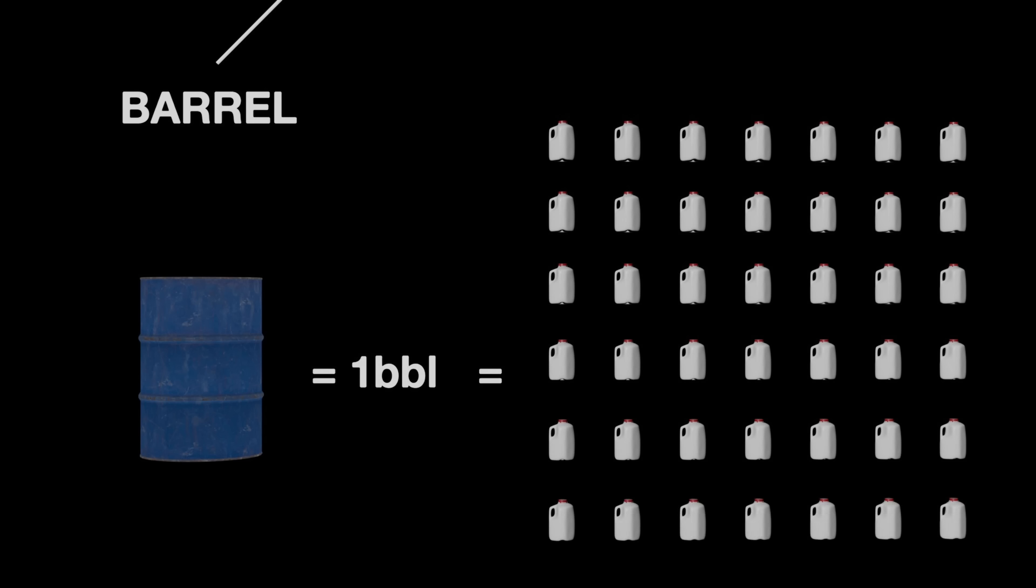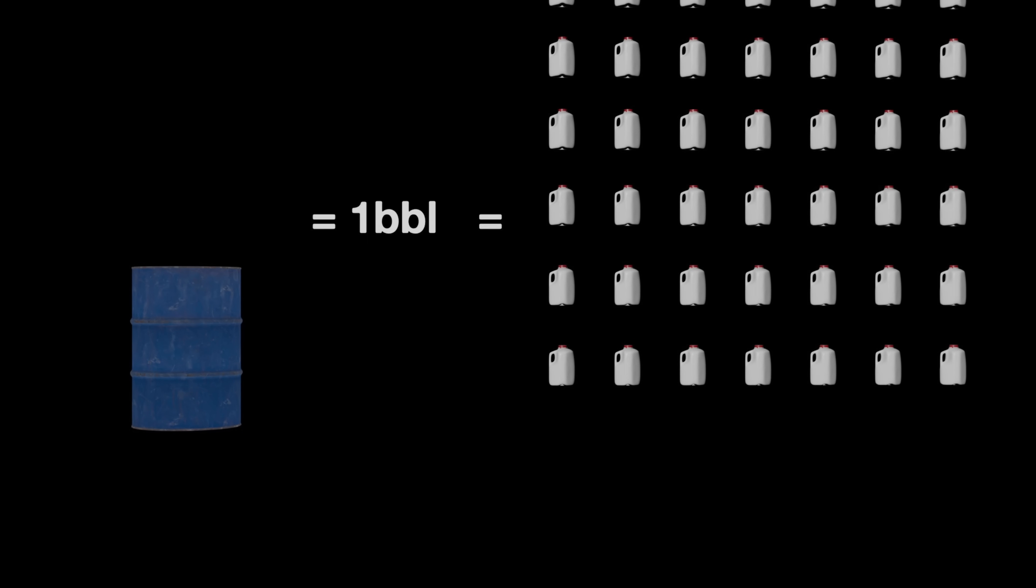Off to a great start here, aren't we? A blue barrel is 42 gallons. US gallons. If you're working in the North Sea, best not mix that up with Imperial gallons, which people do all the time. Because people from the UK don't use gallons anymore, apart from for vehicle fuel efficiency, for some reason.